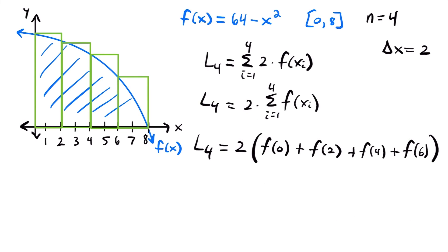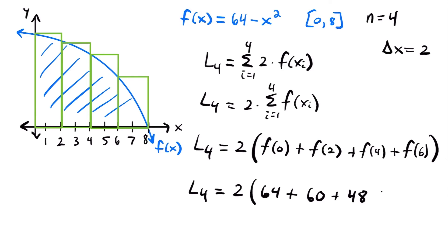We evaluate each of these x values on our function. f(0) = 64 minus 0 squared = 64. f(2) = 64 minus 4 = 60. f(4) = 64 minus 16 = 48. f(6) = 64 minus 36 = 28. The heights of our four rectangles are 64, 60, 48, and 28 respectively.